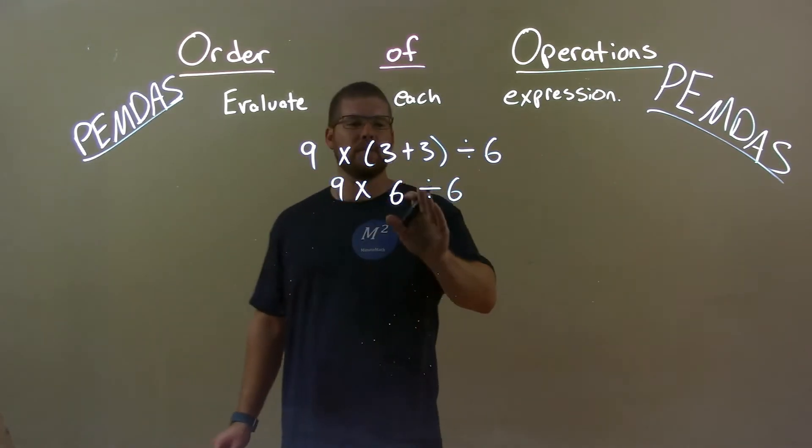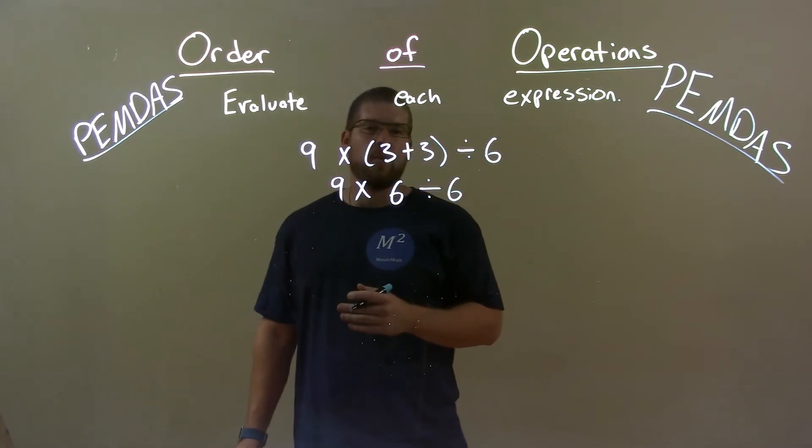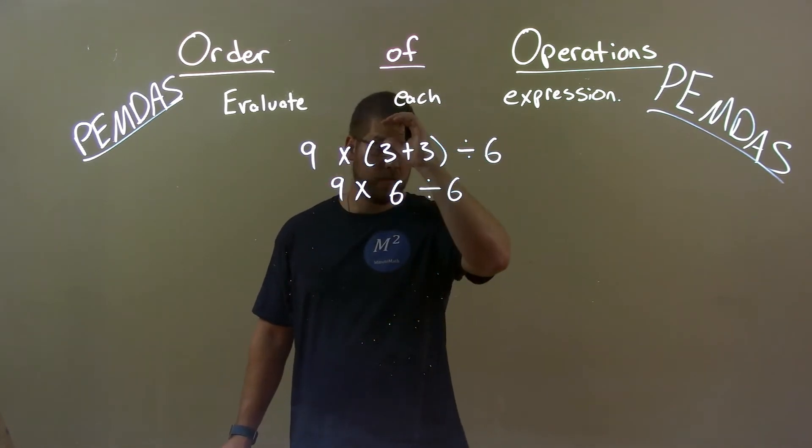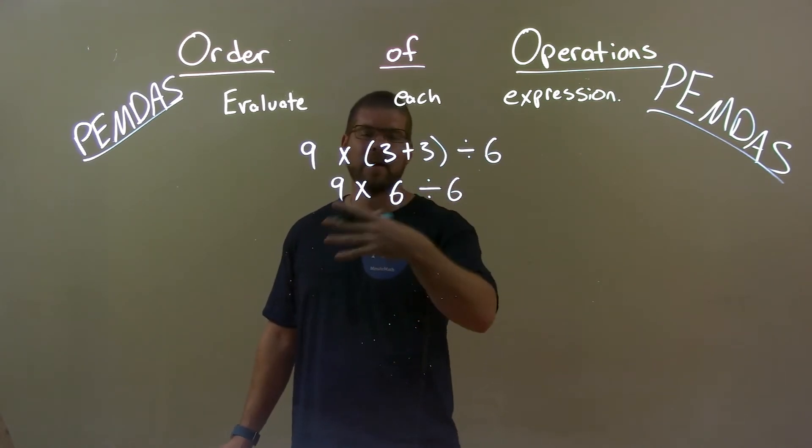So now we have 9 times 6 divided by 6. Well, order is not necessarily super important here with multiplication and division. But let's read left to right and you might be able to see that 6 divided by 6 is 1. 9 times 1 is 9.